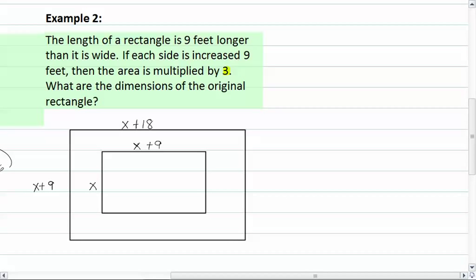Okay, so the area of our big triangle is going to be x plus nine times x plus eighteen, while the area of our small rectangle is x times x plus nine. We need to multiply our small rectangle by three, because it says the area is multiplied by three. So this will be three x times the x plus nine.